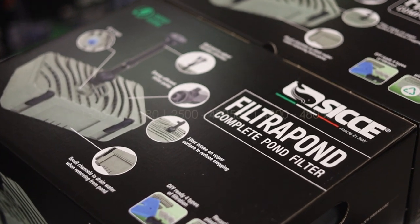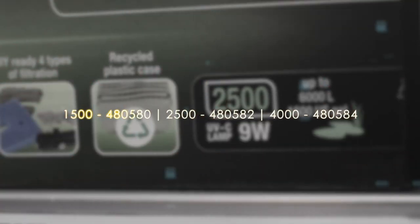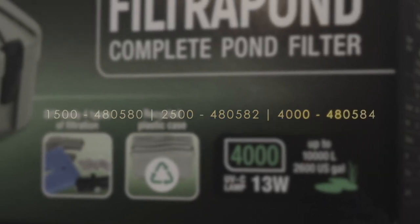The models are as follows: the 1500, which is rated up to a 3,000 liter pond, the 2500 up to a 6,000 liter pond, and the 4000 all the way up to a 10,000 liter pond.